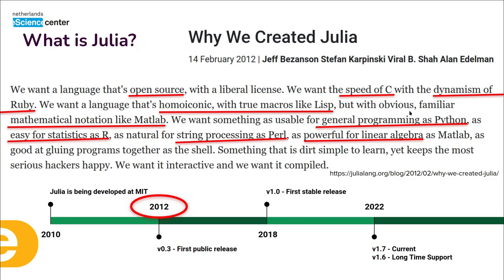Julia was created in 2010 but was released to the public in 2012, accompanied by a blog post explaining why the authors created it. It was a very ambitious objective — they wanted a lot of things — and it was one of the reasons many people tried Julia at the time. In many ways they have succeeded. I recommend reading that blog post; it's still an interesting read today. The first stable release was in 2018, and now in 2022 we have version 1.7 with 1.8 right around the corner.